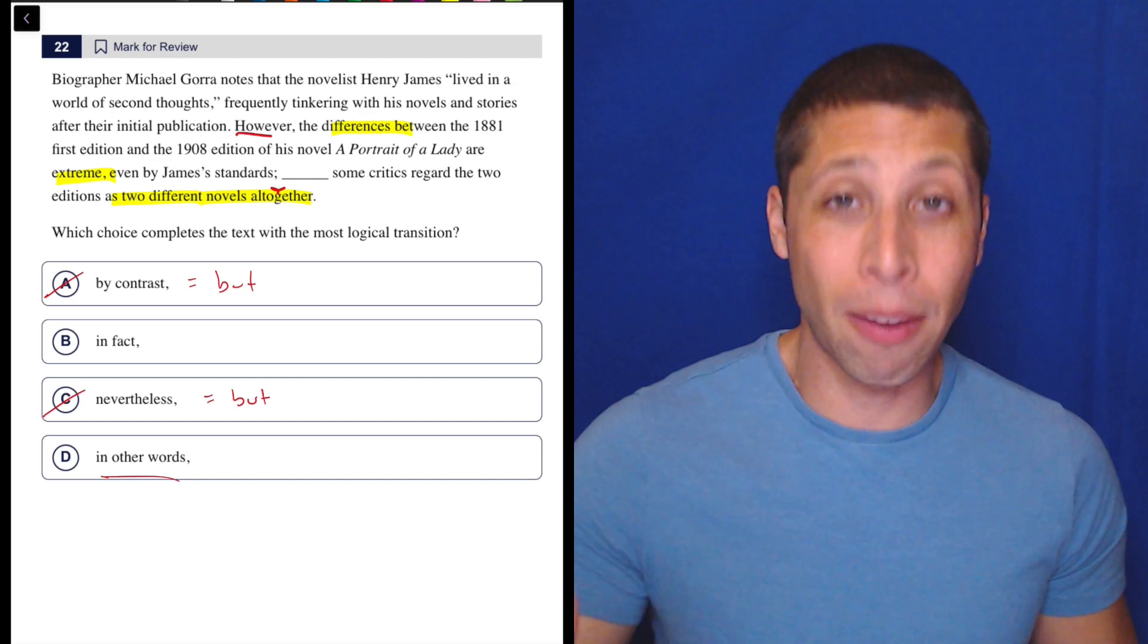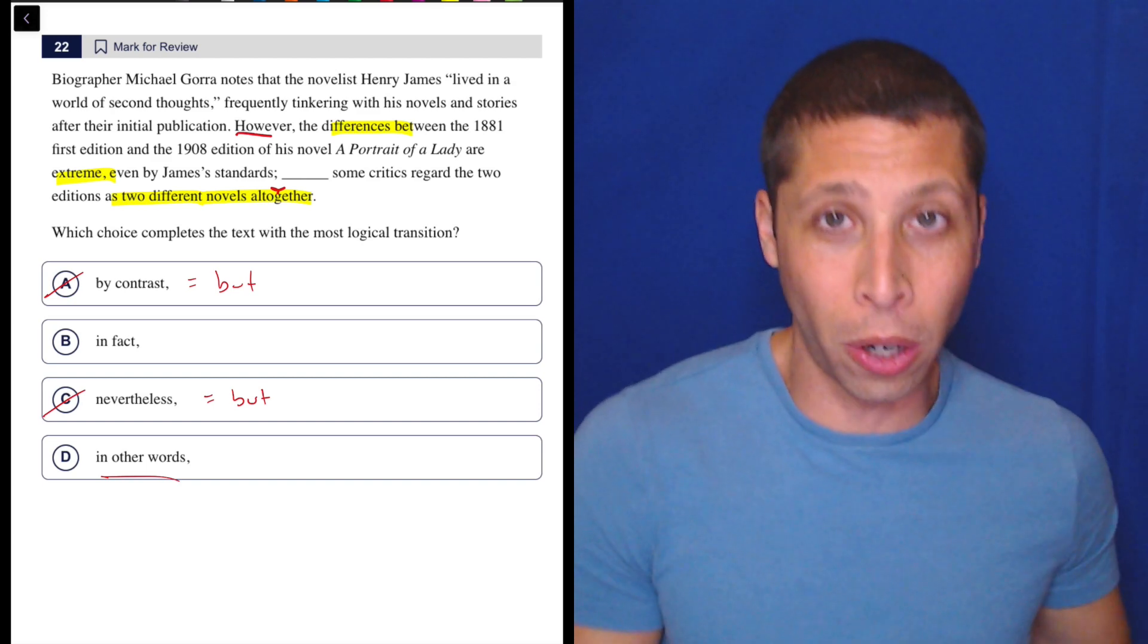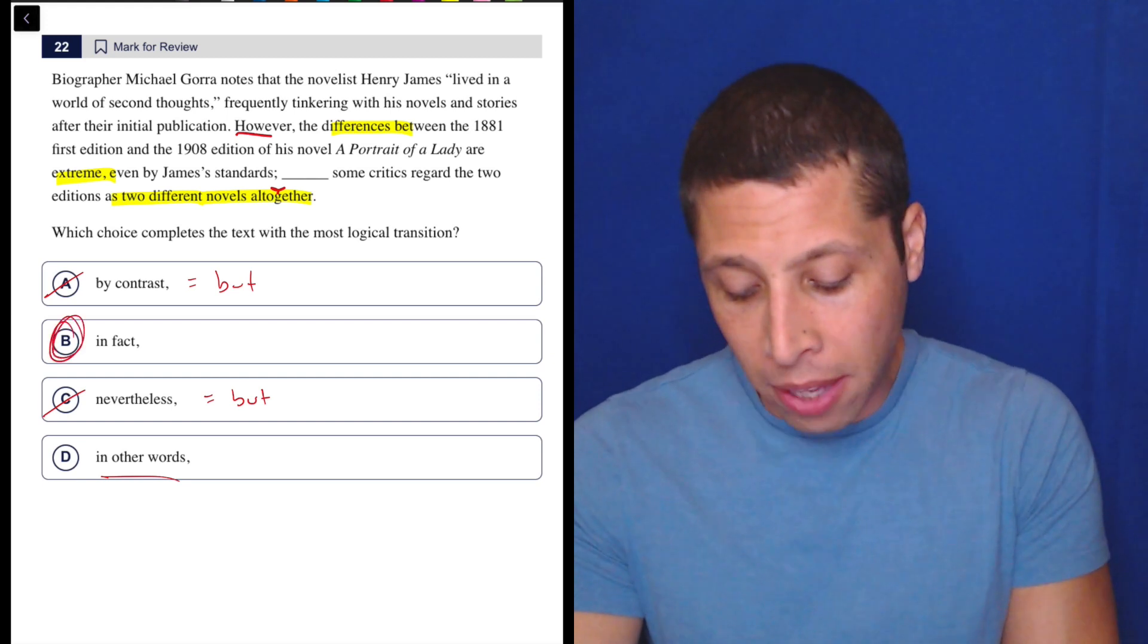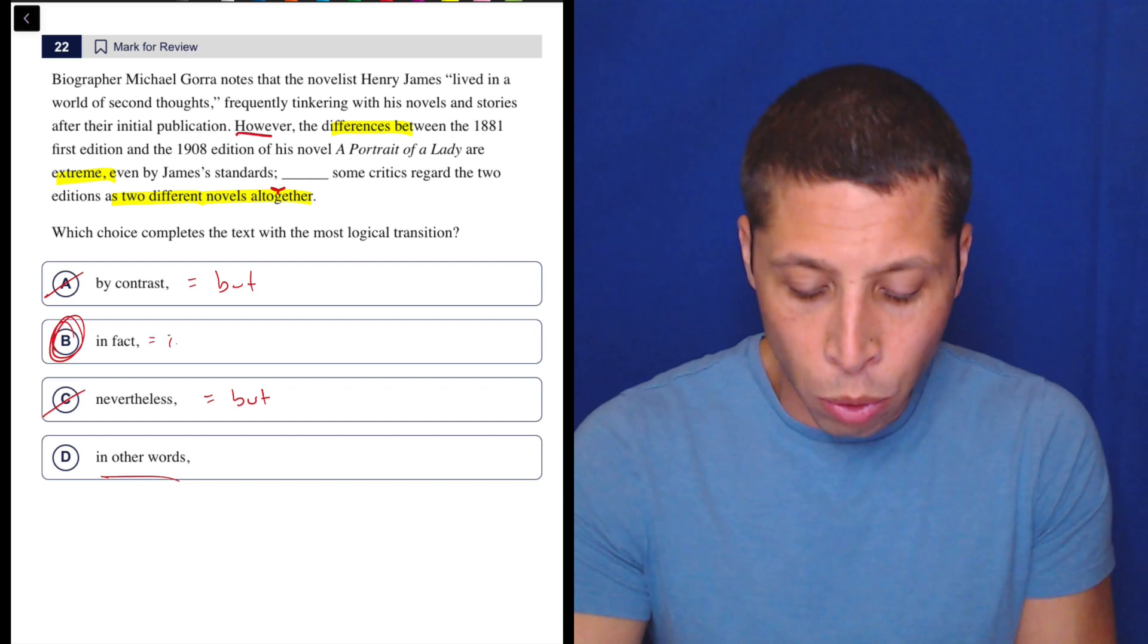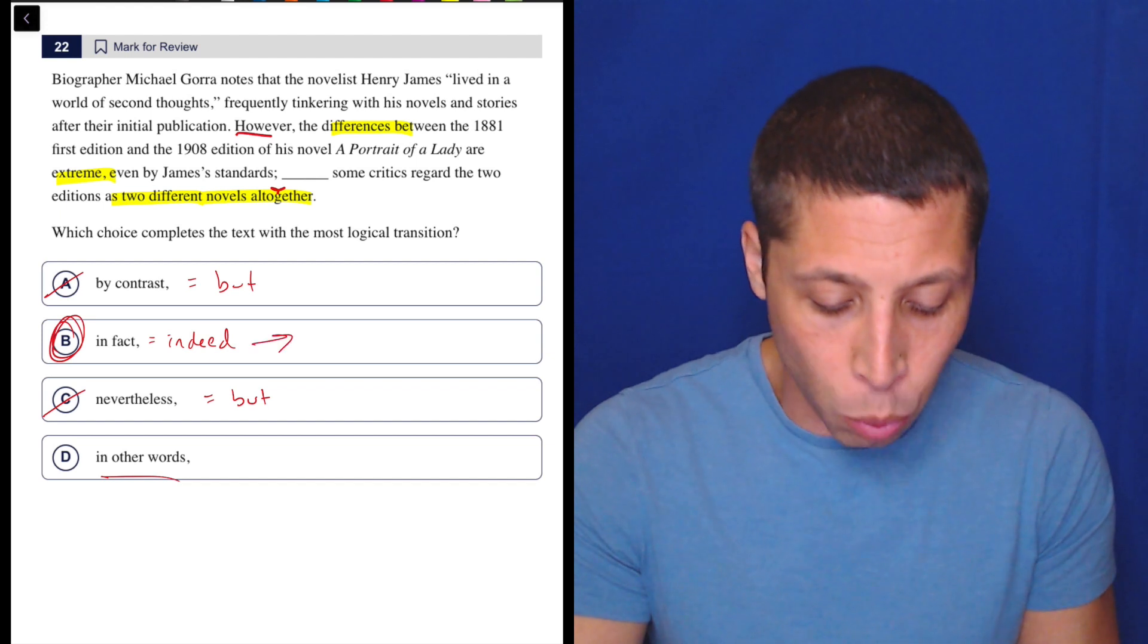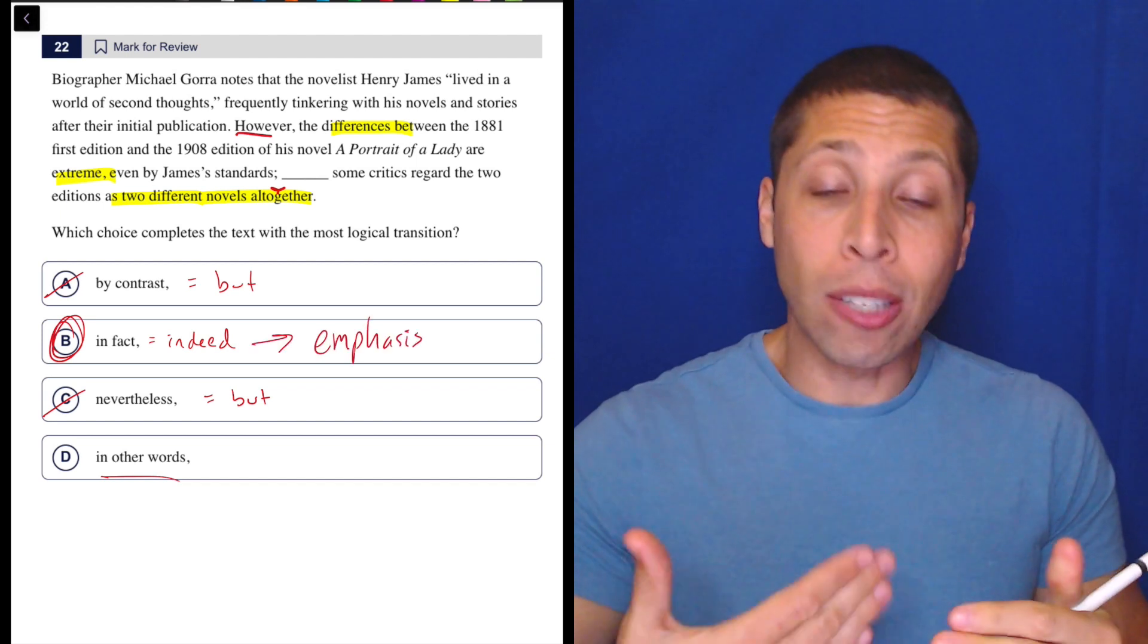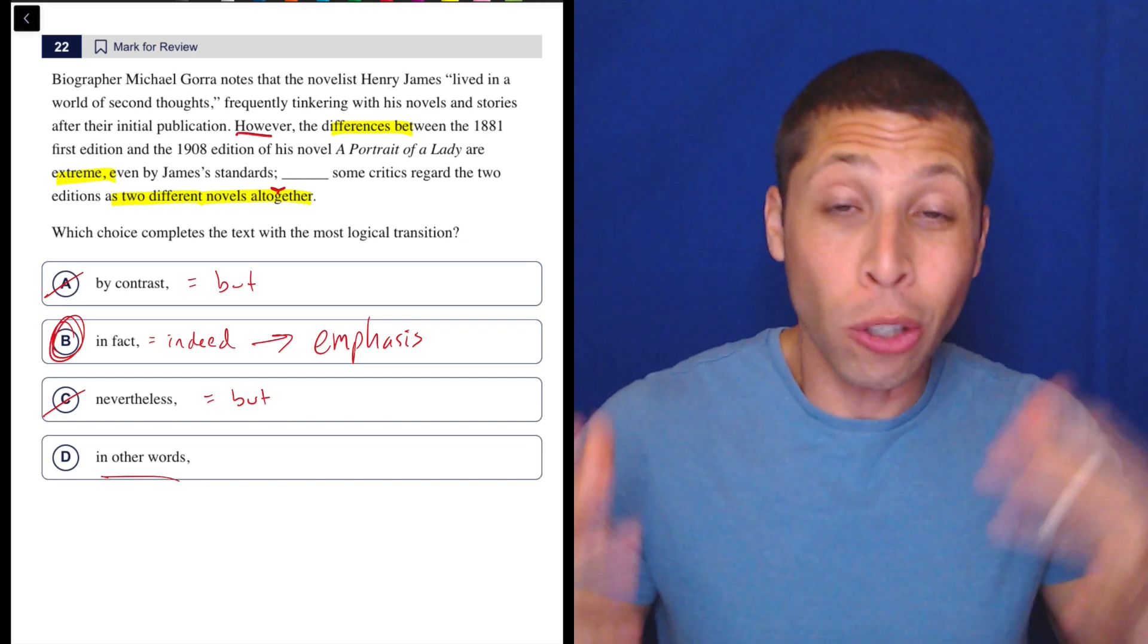And so choice D we really have to think of as very literal. We are putting what we just said in other words and not changing it or adding to it in any real way. And that leaves us with in fact, which is a transition we wouldn't maybe jump to. It's very similar to the word indeed, which we've seen on some of these questions. But basically it is a word that adds emphasis, and in this case I think it's also allowing that kind of enhancement.